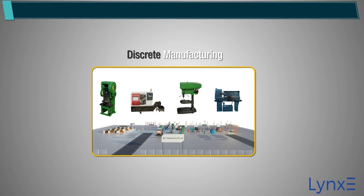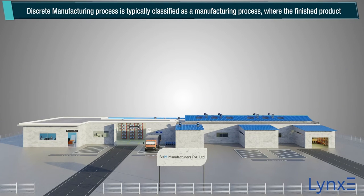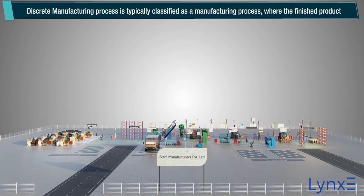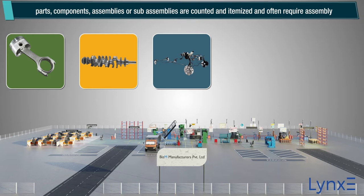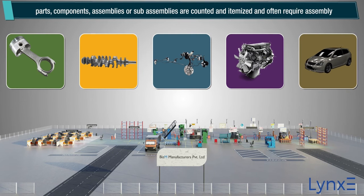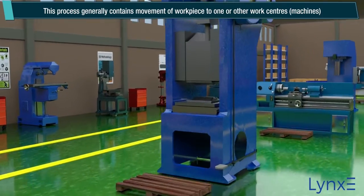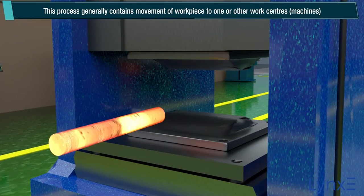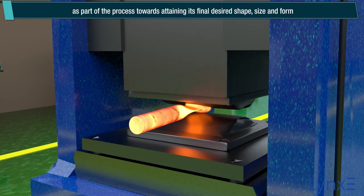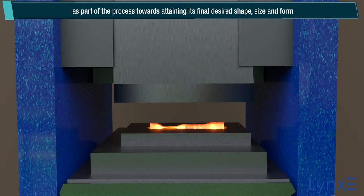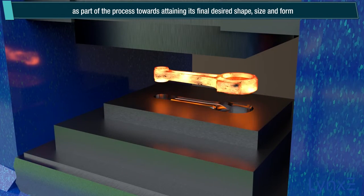Discrete manufacturing process is typically classified as a manufacturing process where the finished product, parts, components, assemblies or sub-assemblies are counted and itemized and often require assembly. This process generally contains movement of workpiece to one or other work centers or machines as part of the process towards attaining its final desired shape, size and form.